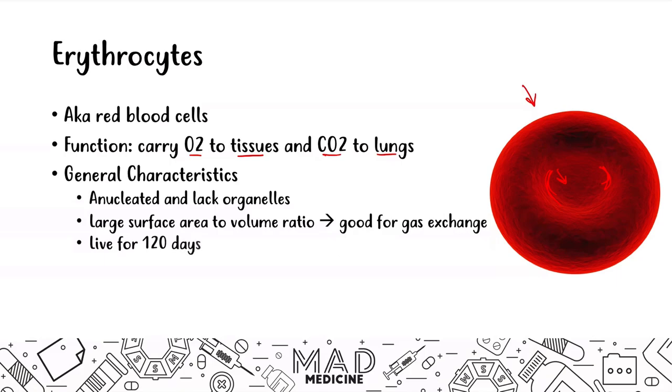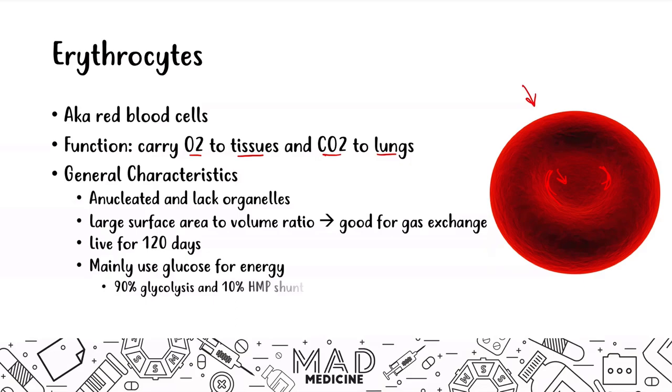Red blood cells live mainly for 120 days, and they mainly use glucose for energy via glycolysis, and 10% via the HMP shunt.